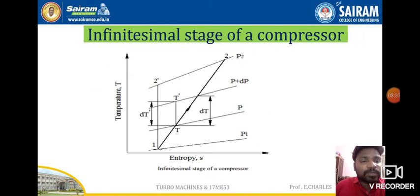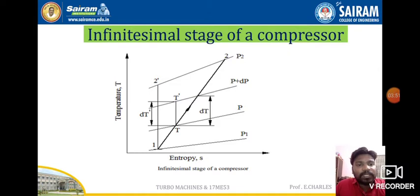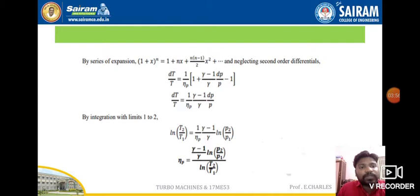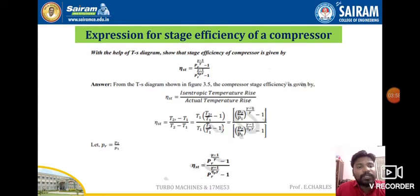As seen in the figure, dt is the temperature difference between pressures p and p plus dp, and t-dash represents dt-dash. The isentropic process is compared to the actual process. Moving back to the equation, the stagnation isentropic efficiency equals (t2-dash minus t1) divided by (t2 minus t1).